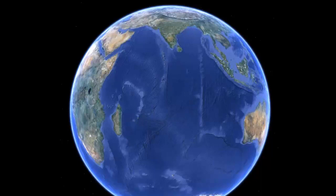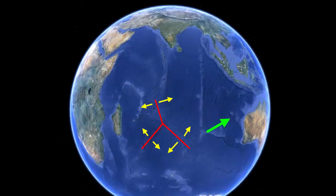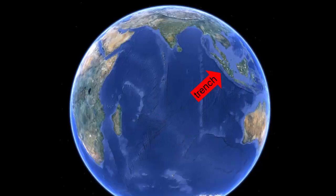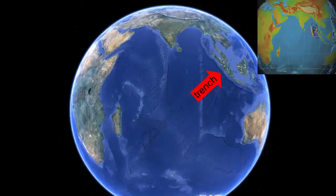Let's go to the Indian Ocean. What do we see here? Three ocean ridge spreading centers meeting at one point in the center of the ocean. There are no trenches along the east coast of Africa, the southern coast of India, or the western coast of Australia. There is one, however, along the islands of Indonesia — the subduction zone that caused a large tsunami in 2004 that killed a quarter of a million people in the Indian Ocean.